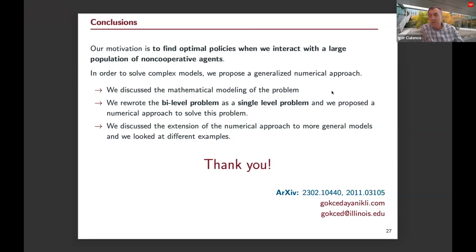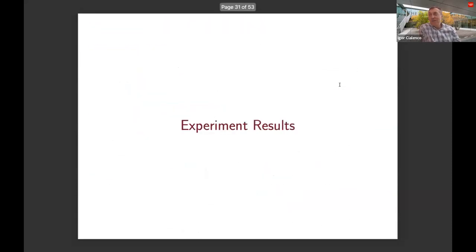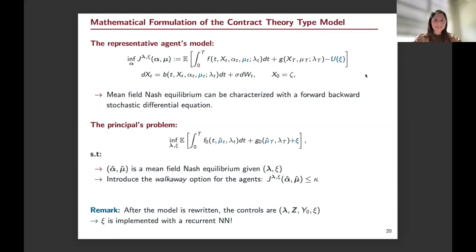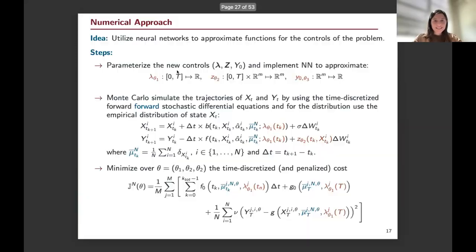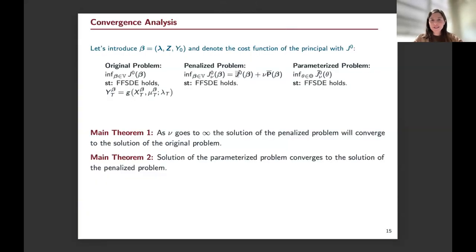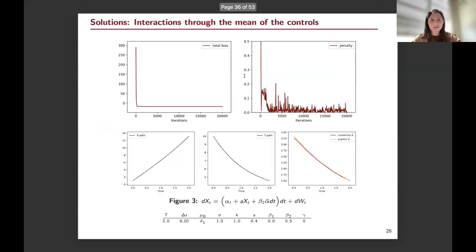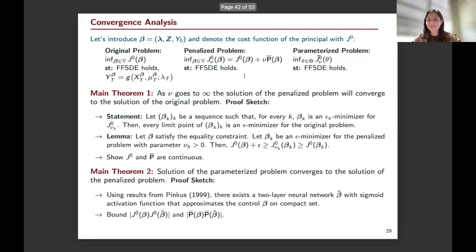A quick question: you showed those two theorems about the convergence steps. Can you comment briefly on how you proved that? The important thing is we need to show continuity of the objective with respect to beta and p-bar with respect to beta. That was the main step. After that, we have a beta sequence, take the limit, and we can pass the limit inside. I have some appendix parts I can share so we can discuss it.